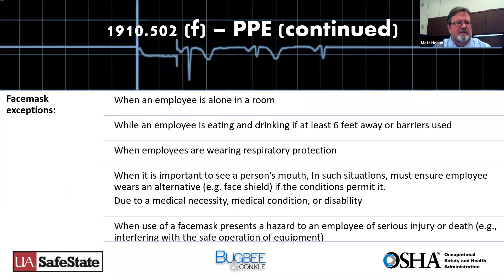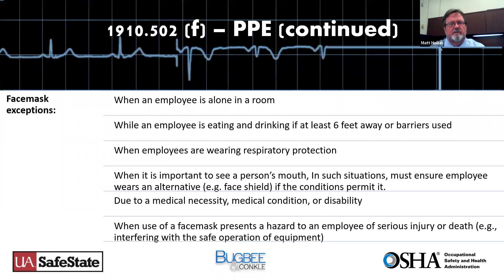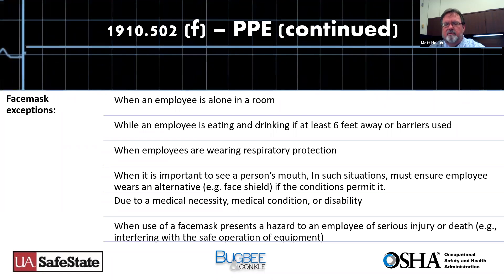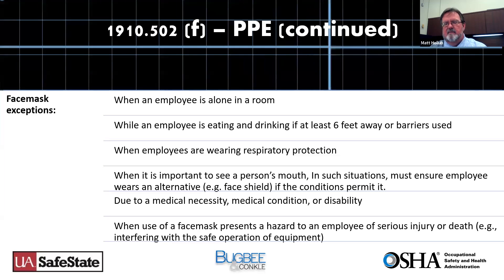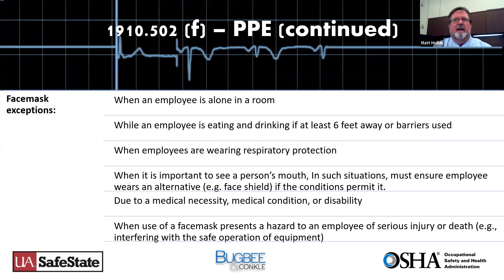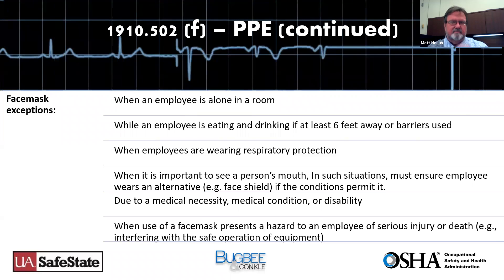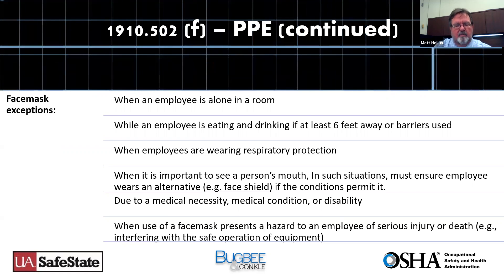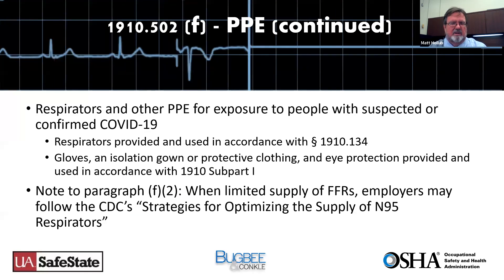Exceptions for face mask use include: employee alone in a room; eating or drinking at least six feet from others or with a barrier; wearing respiratory protection already; or when it is important to see the person's mouth, in which case you must provide an alternative like a face shield. If a face mask presents a serious injury or death hazard — such as interfering with the safe operation of equipment — you may also be exempt from that requirement.